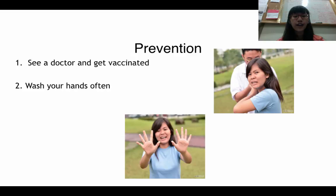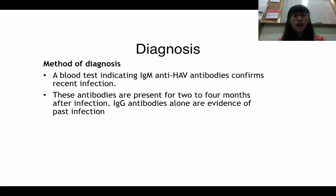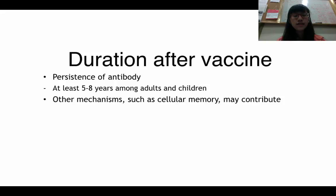To prevent Hepatitis A, the best solution is to see a doctor and get vaccinated, and of course wash hands frequently, since the disease is spread through ingesting tiny amounts of fecal matter. Use caution around infected people, as they can unintentionally transmit the disease, and be especially alert during international travel. Clinically, Hepatitis A can be diagnosed by a blood test. The presence of IgG antibodies alone is evidence of past infection, while IgM antibodies confirm recent infection.